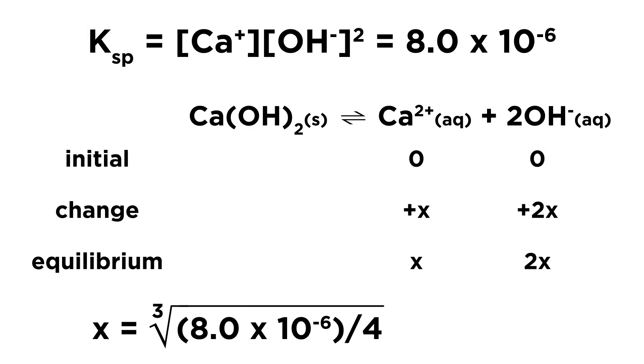Now solving for X, we divide by 4 and then take the cube root, leaving us with 1.3 times 10 to the negative 2 for X, which will therefore be the molar solubility, which we can interpret as the solubility of the solid expressed in moles per liter, or the moles of the solid that will dissolve per liter of water.